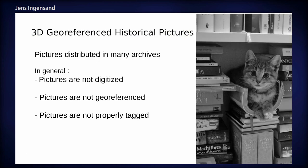However, 3D georeferenced historical pictures are often distributed in many archives around the world. One problem is that these pictures are generally not digitized, so in order to use them with the computer you need to put them on the scanner. Then of course pictures are not georeferenced, which is needed to use them with different algorithms. And often pictures are not properly tagged, so nobody knows exactly where they have been taken, when they have been taken, and what is visible on them.